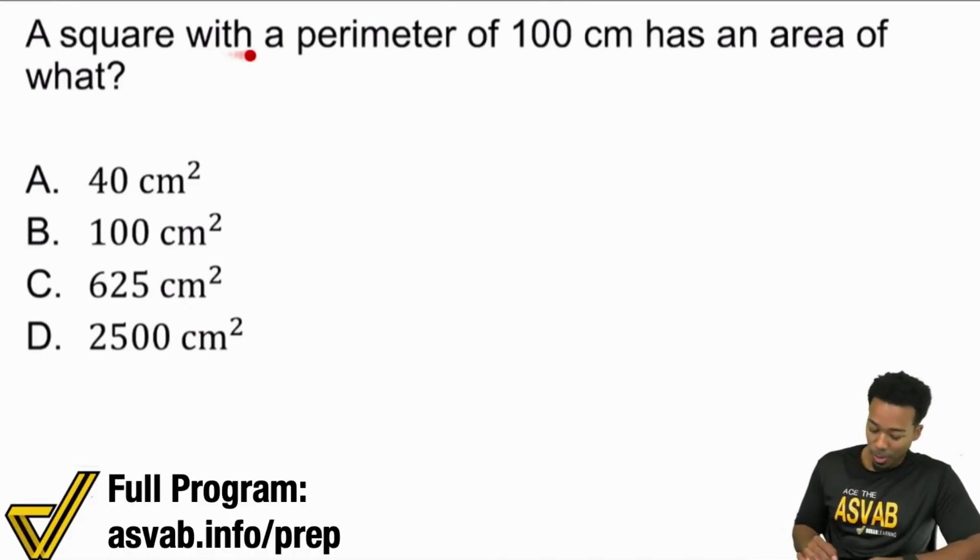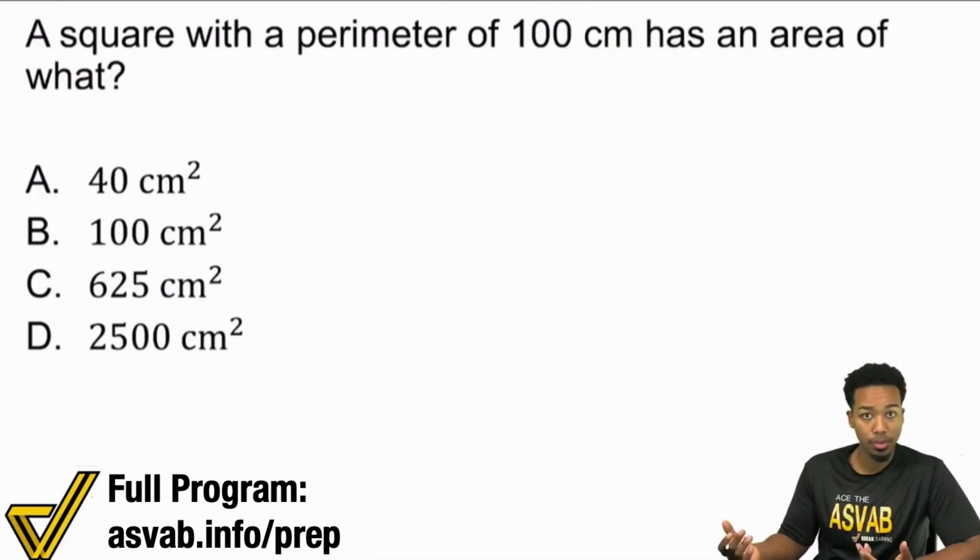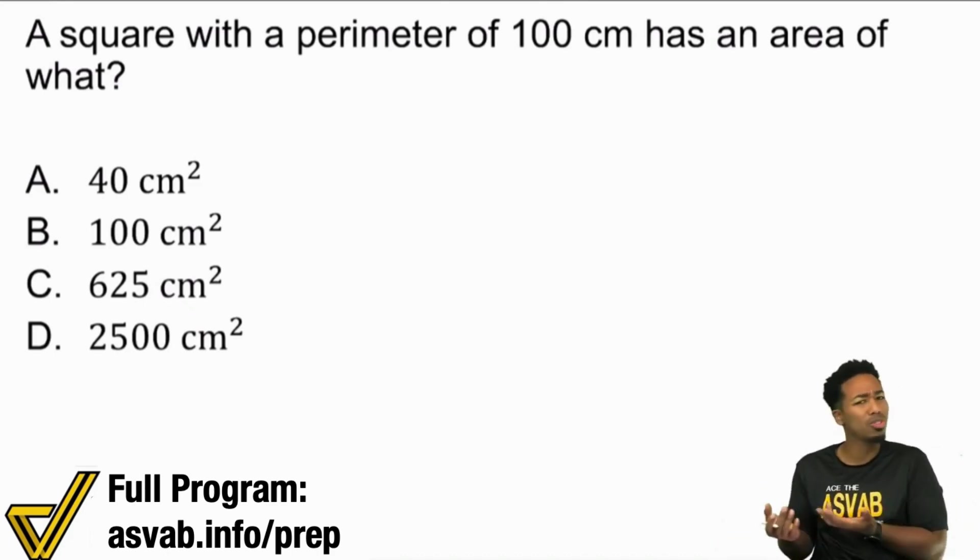So a square with a perimeter of 100 centimeters has an area of what? Okay, so here's the thing, my party people. One of the things that we have to make sure that we do here, one of the things that we have to make sure we do is understand what the goal is. If you don't know what the goal is, then it's so much harder to actually understand how the information connects. So that's the biggest thing that I get.